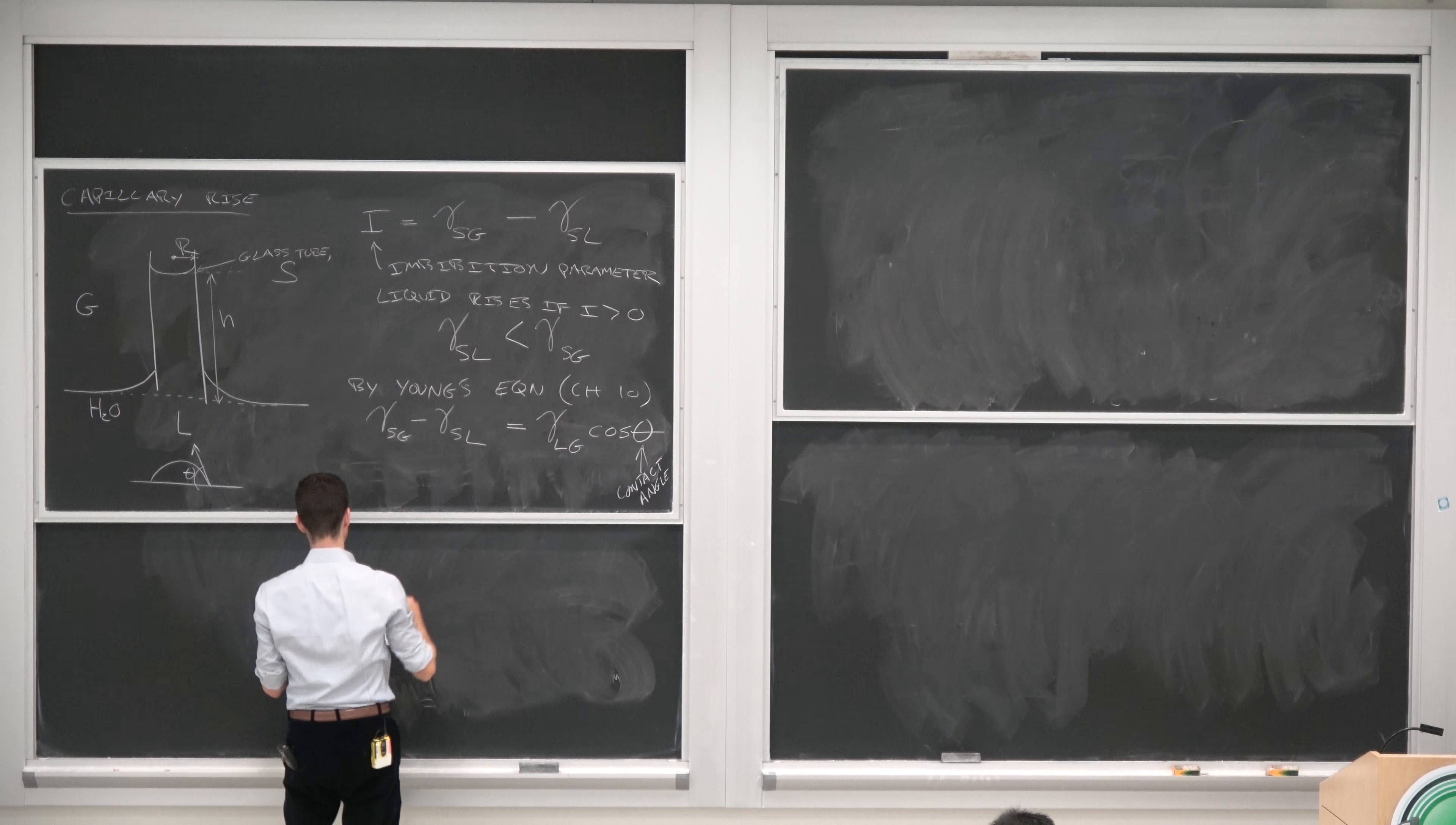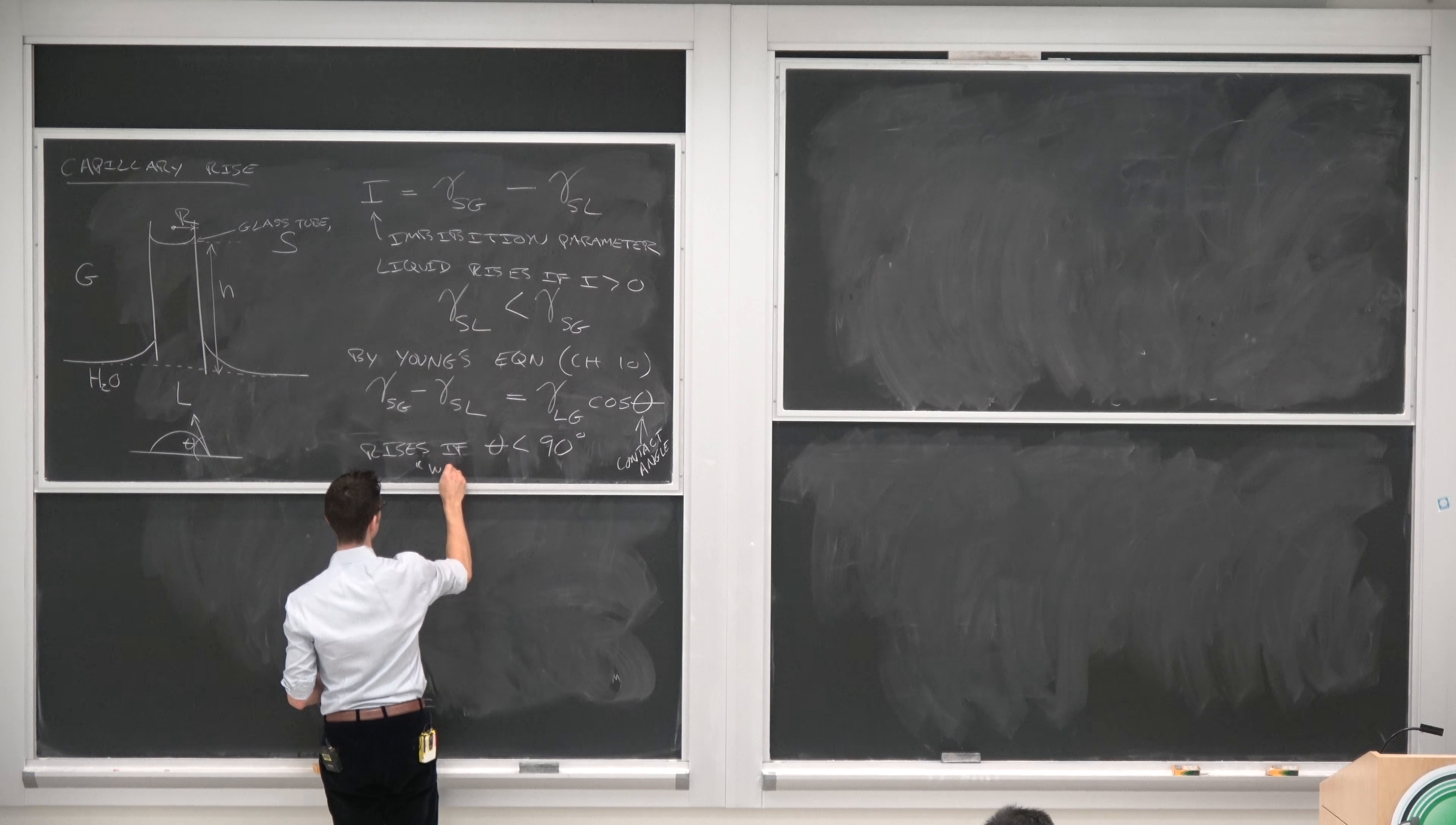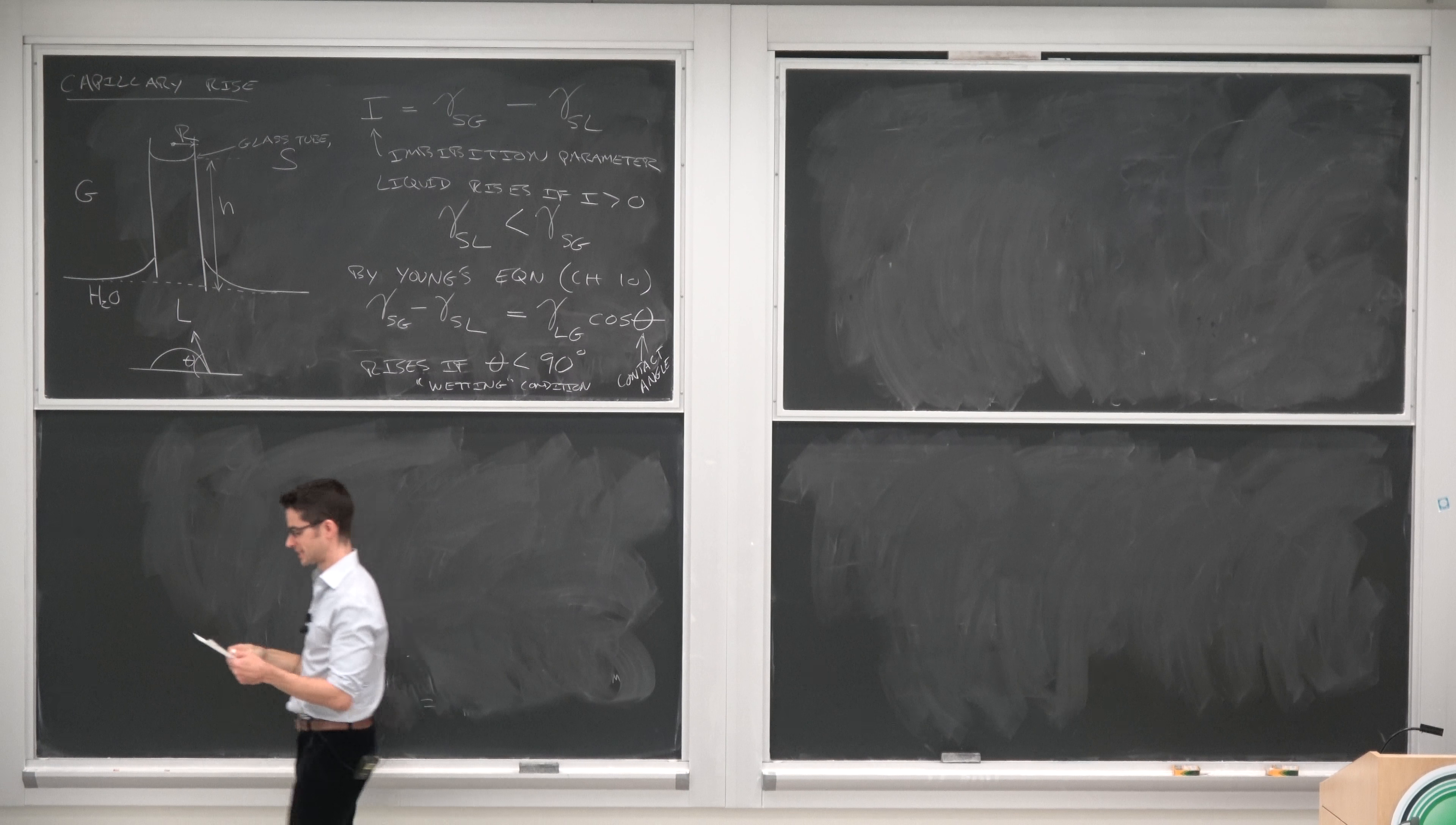And this is the contact angle between this liquid and this gas on this surface, like this. And we can see that the liquid rises if theta is less than 90 degrees.